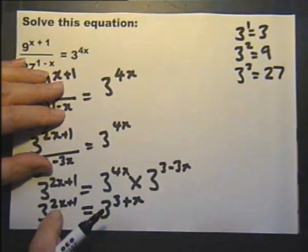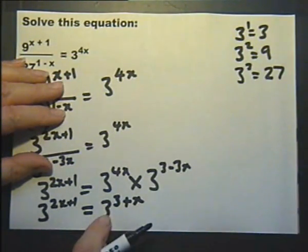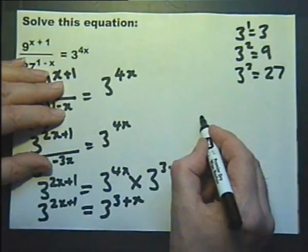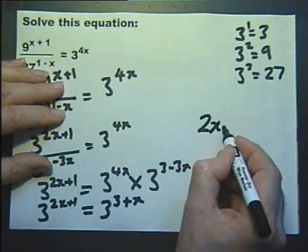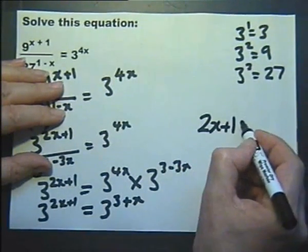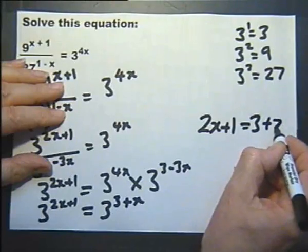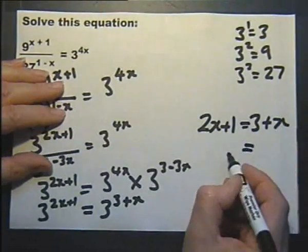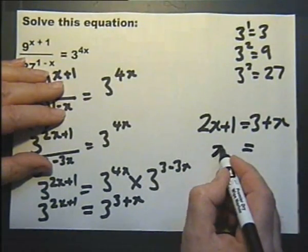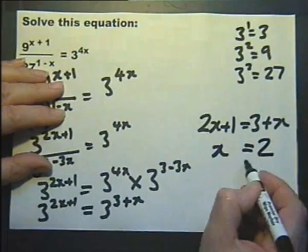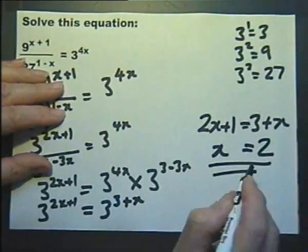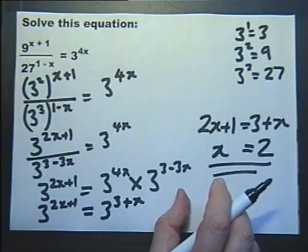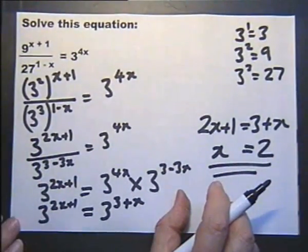Now, if we've got 3 raised to the power of something equals 3 raised to the power of something, then these two powers must be the same. So I can write down 2x plus 1 equals 3 plus x. Subtracting x from both sides, subtracting 1 from both sides, we've worked out the value of the unknown x is 2.